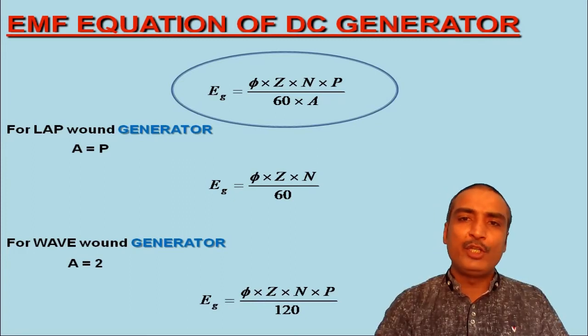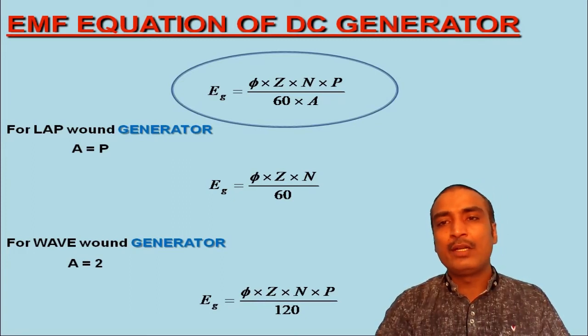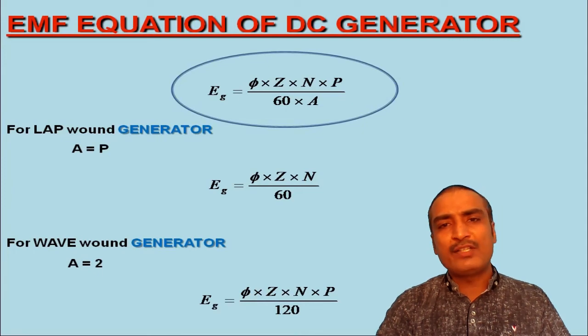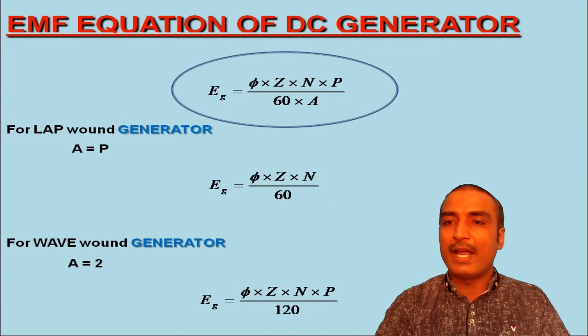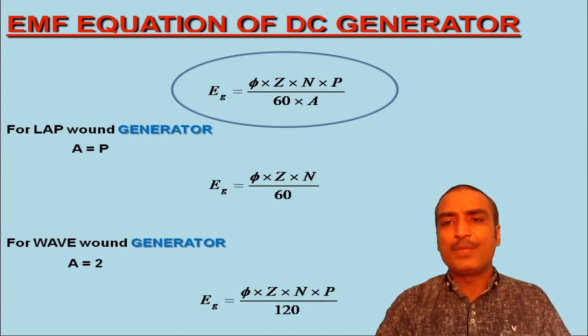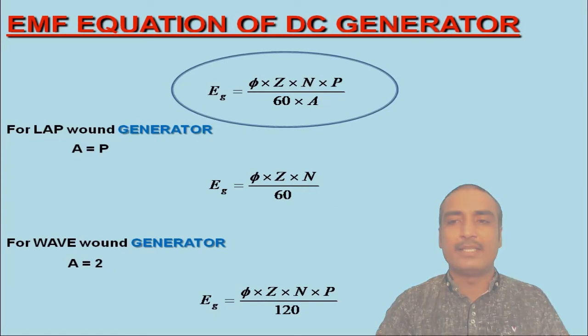Once again, this is to remind you that the generator action and motor action occur simultaneously in DC machines. In view of this fact, whenever a DC machine is operated as a motor, an EMF does induce in the armature conductors termed as back EMF or counter EMF. This concept has already been discussed by me in one of my short lectures in this series.